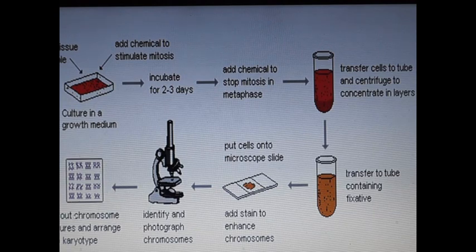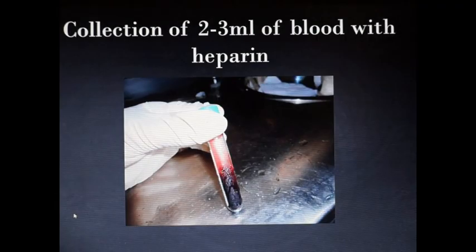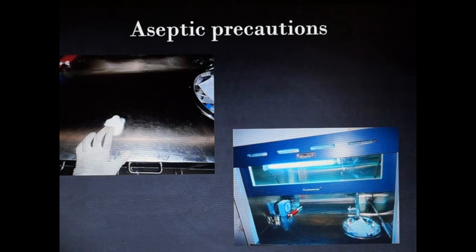For the collection of blood, usually for karyotyping, peripheral blood is taken, around 2 to 3 ml of peripheral blood is taken. Apart from peripheral blood, we can use bone marrow, we can use buccal cell typing. Approximately around 2 to 3 ml of blood is taken in a heparin-coated vacutainer. Heparin is an anticoagulant which prevents the blood from coagulating and the karyotyping is always done in fresh blood. Once we collect the blood, the karyotyping should be initiated within 24 hours.